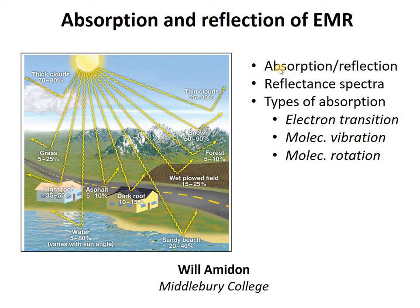We're going to talk about three things: what are absorption and reflection; how do those combine to give us a reflectance spectra or a specific kind of reflectance signature for each material; and what are the types of absorption that can happen — electron transition, molecular vibration, and molecular rotation — and how are those different, and how do they affect different processes differently?